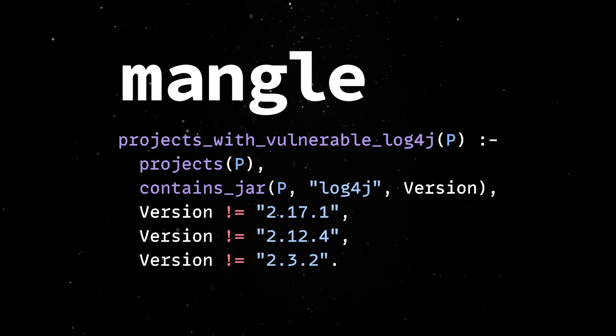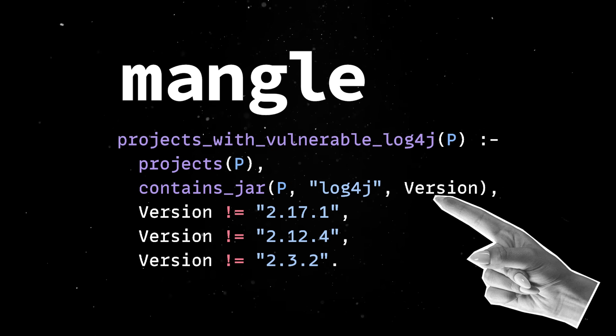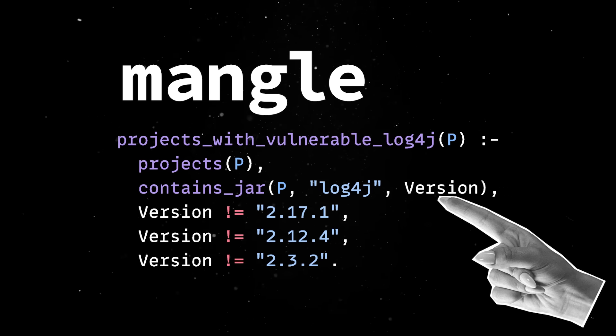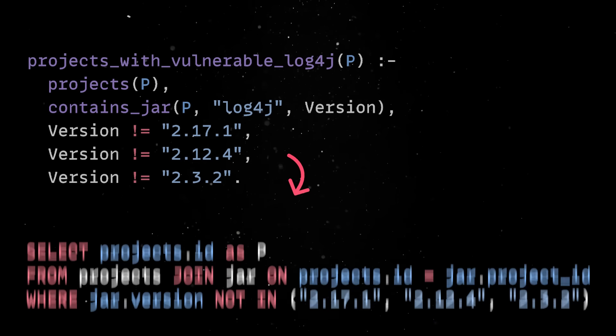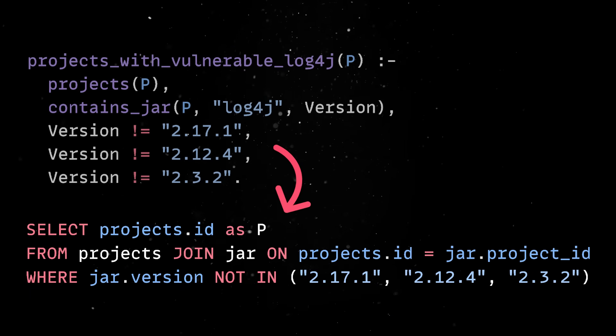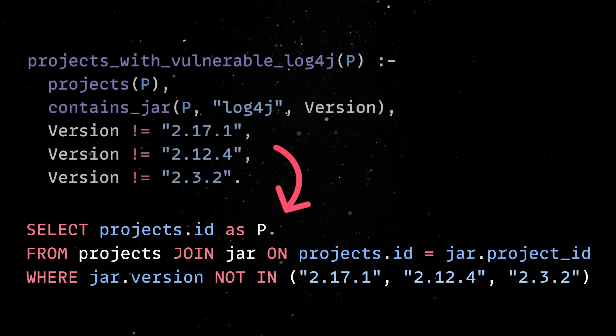To do that, we can run a Mangle rule that retrieves all projects that make the subgoal true. To give you a better understanding of this rule, the same operation in SQL would look like this.